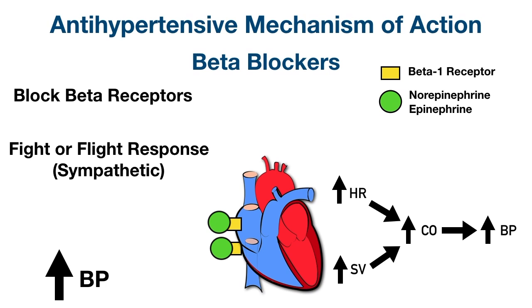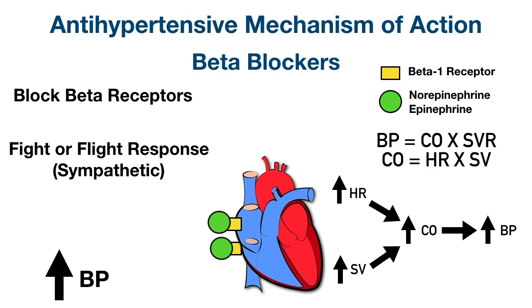Remember, blood pressure equals cardiac output times systemic vascular resistance, also known as total peripheral resistance. Cardiac output equals heart rate times stroke volume. So if we increase heart rate and stroke volume, cardiac output will increase, which will in turn increase blood pressure.